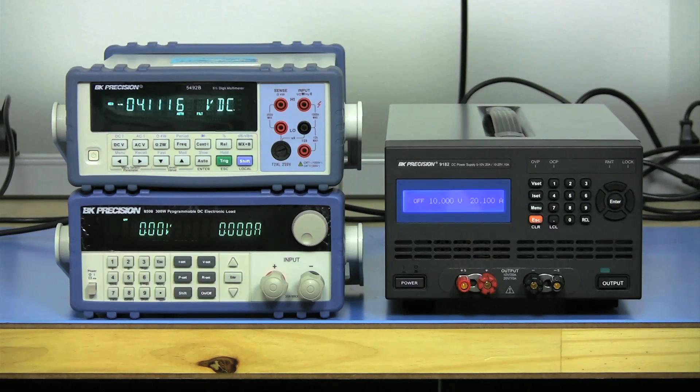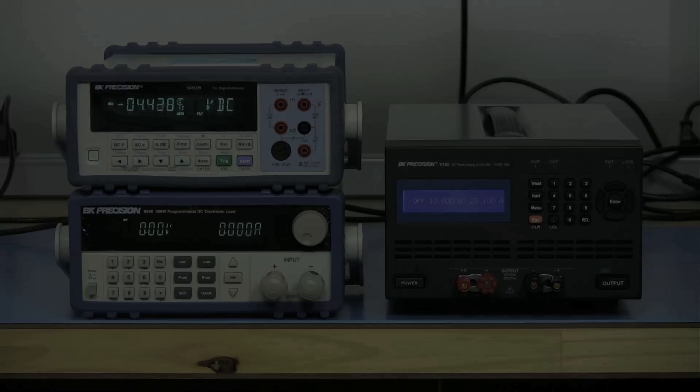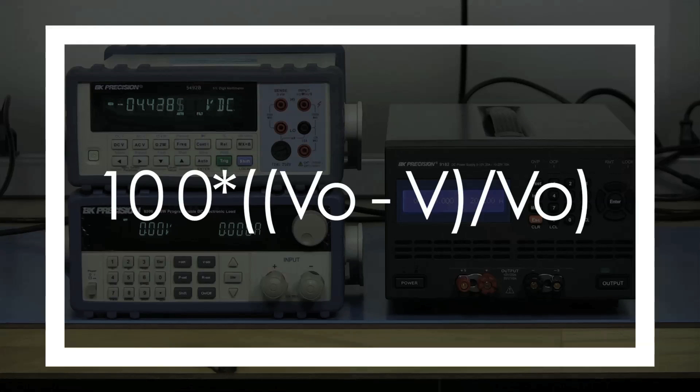Now the load regulation can be calculated in a percentage by the following formula, where VO is the voltage with zero current load, and V is the voltage you just recorded with 20 amp load.